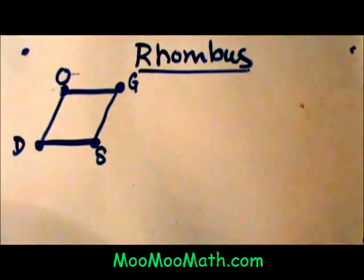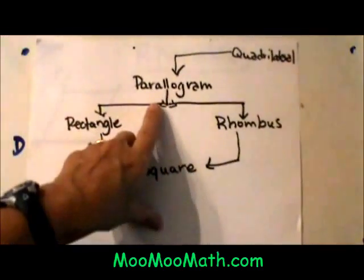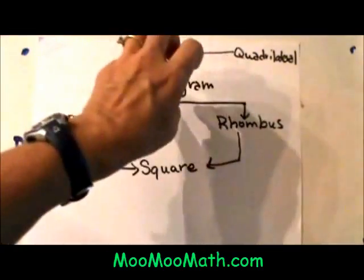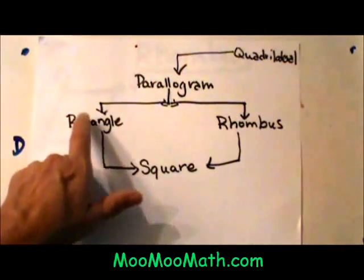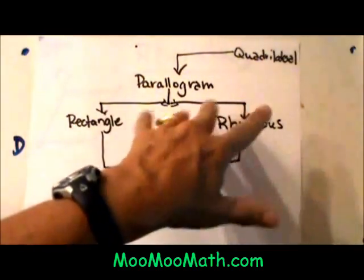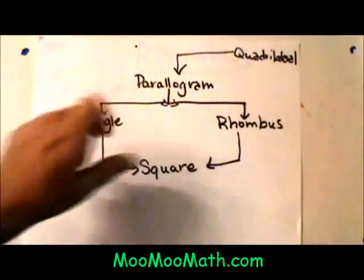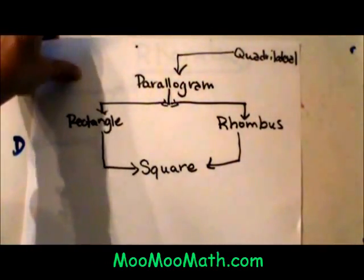A rhombus falls in the quadrilateral family as a parallelogram. So we have quadrilaterals and then a smaller subgroup of parallelograms. There are rectangles over here and then there are rhombuses over here, and these two are not the same — they are two different groups. Let's look at how a rhombus is different than a rectangle.